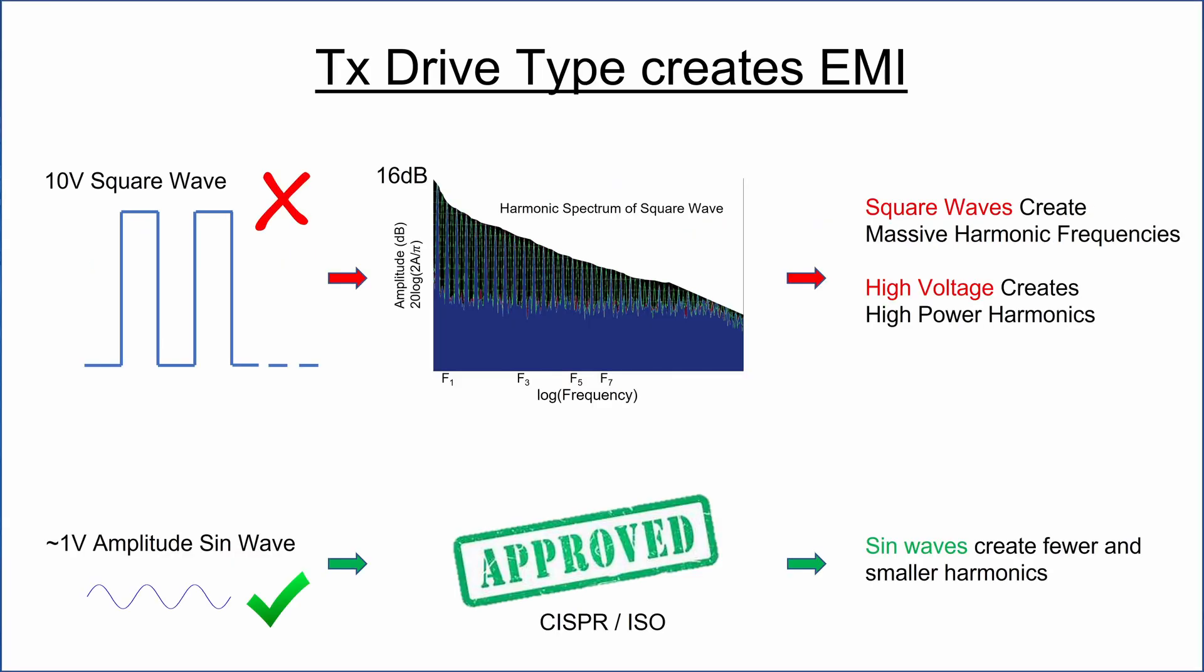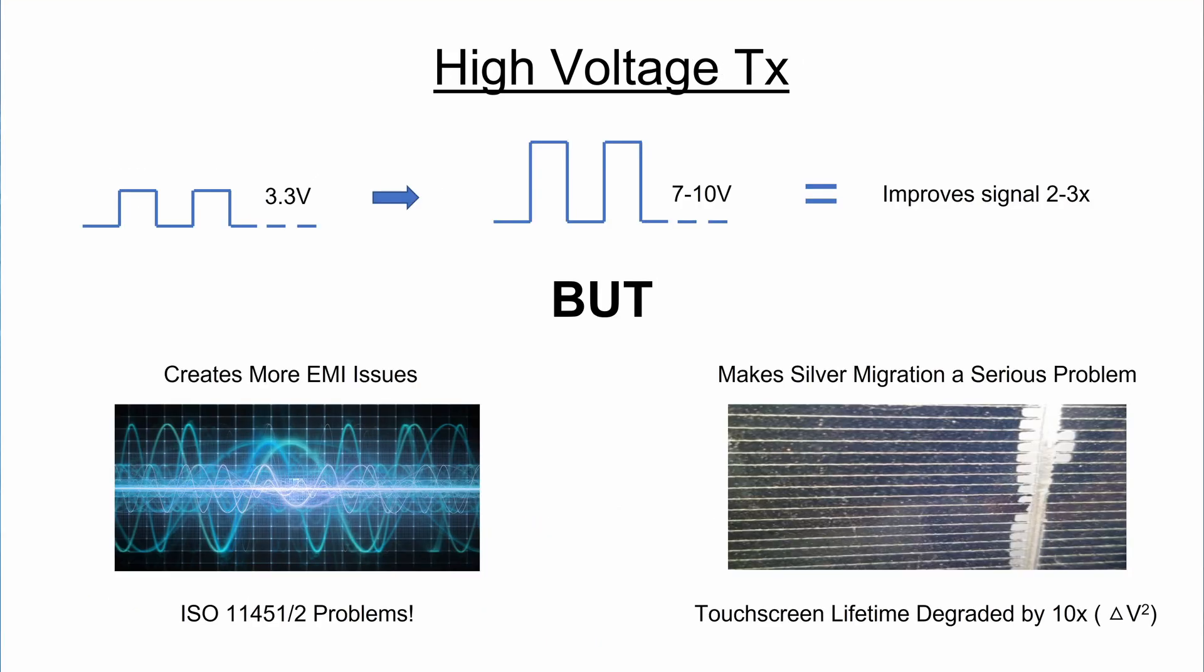Aside from the obvious EMI problems, a 7 to 10 volt square wave being shoved into 1500 capacitors in your sensor at 200 kilohertz can create for the system, the high voltage TX also makes silver migration reliability problems worse, and at a factor of V squared. Yikes.